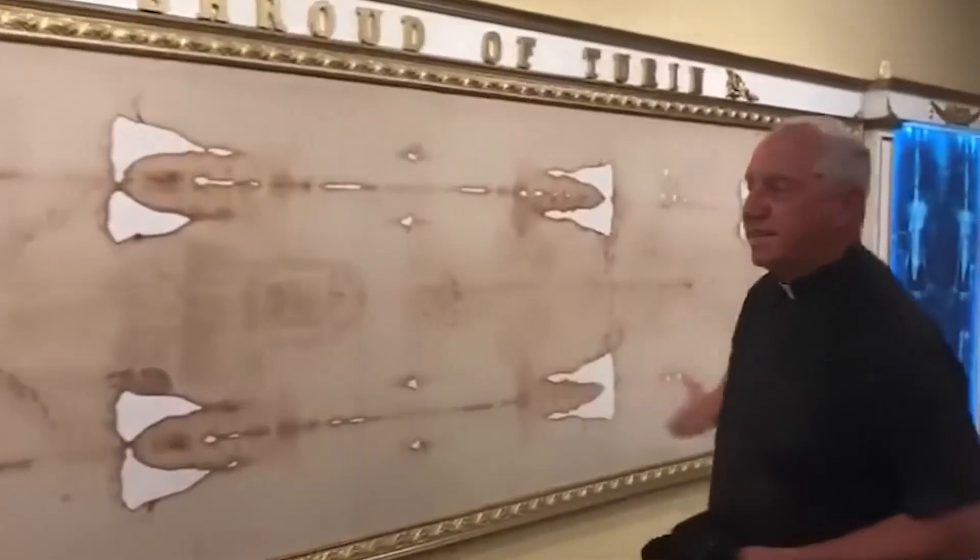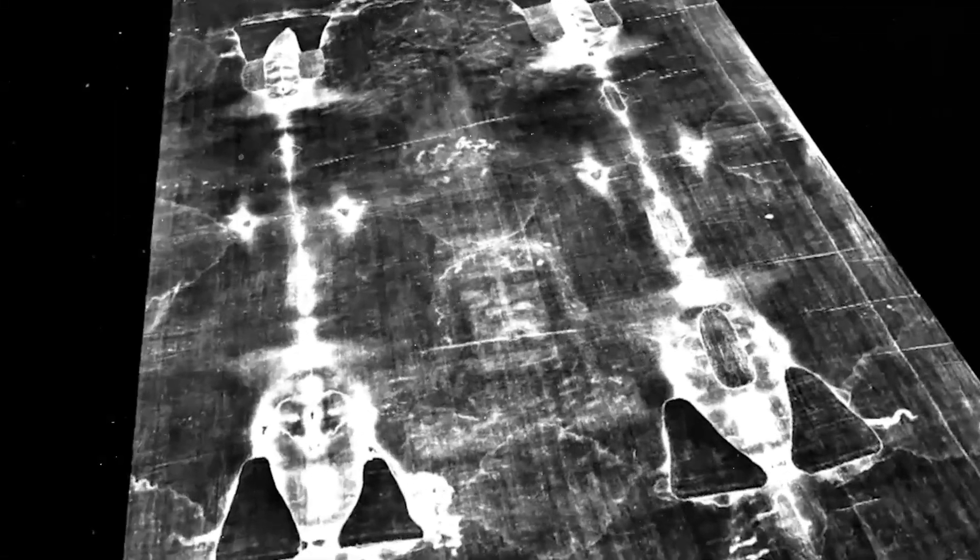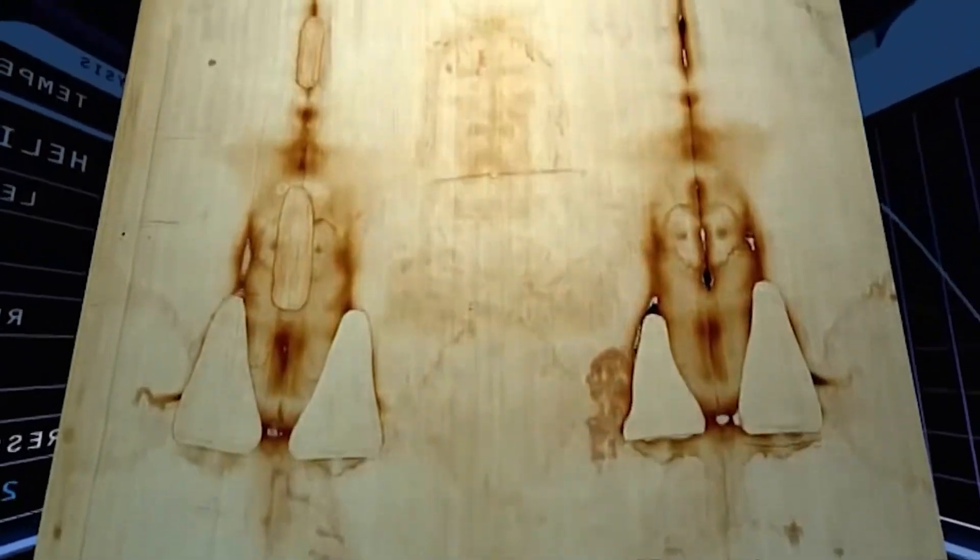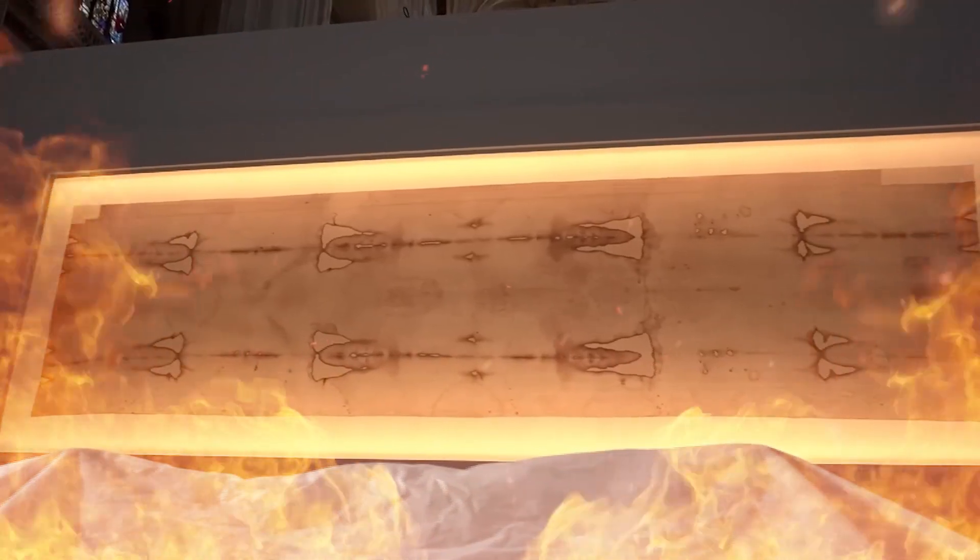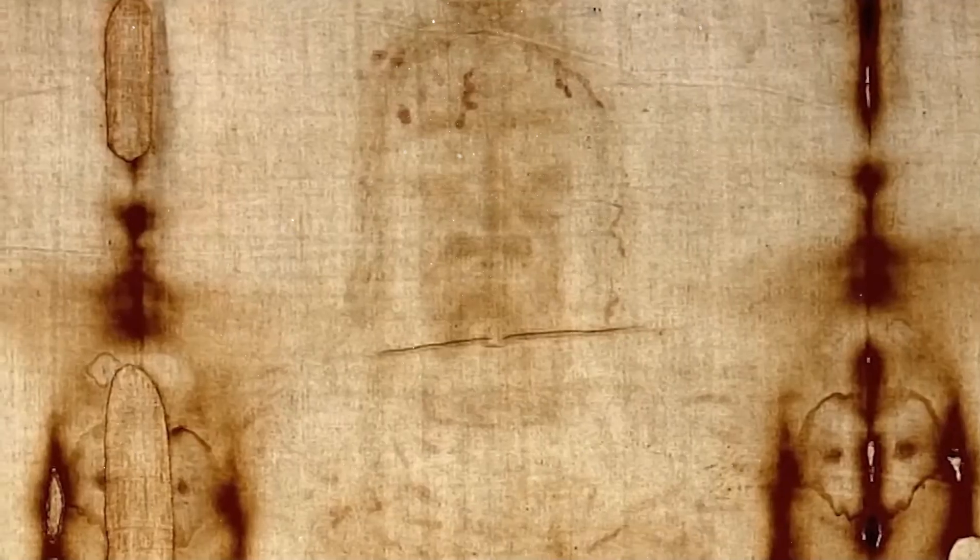But not all things are what they seem. Almost immediately, scientists not involved in the test began pointing out huge problems. The biggest problem? The sample itself. The sample was cut from one single spot on the shroud's corner. This was one of the most handled, damaged, and repaired areas of the entire cloth. You see, the shroud survived several fires in its history, most notably one in 1532. It was badly damaged. A group of poor Claire nuns patched the burn holes and, crucially, sewed the entire shroud onto a new backing cloth to strengthen it.